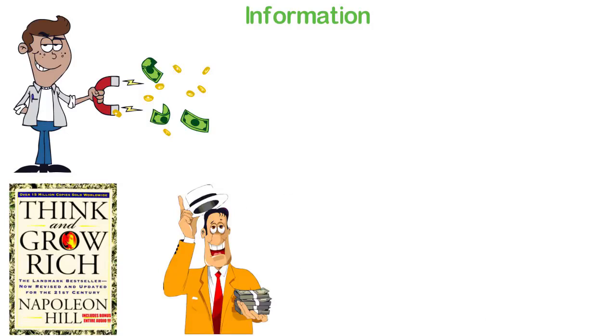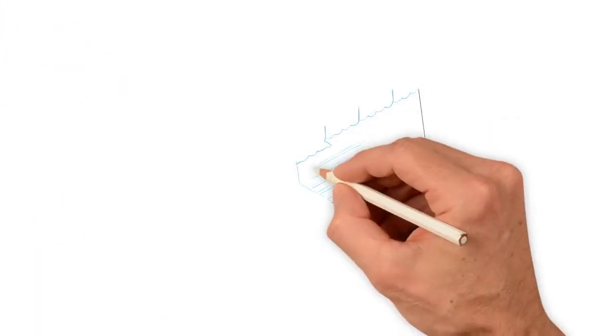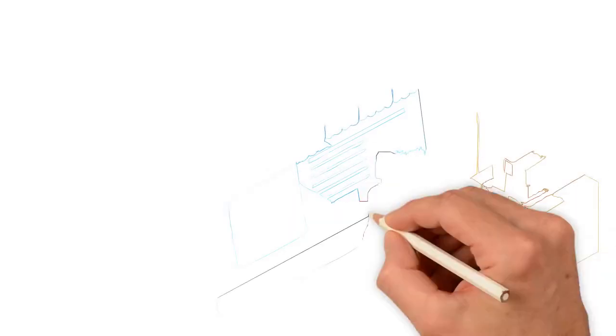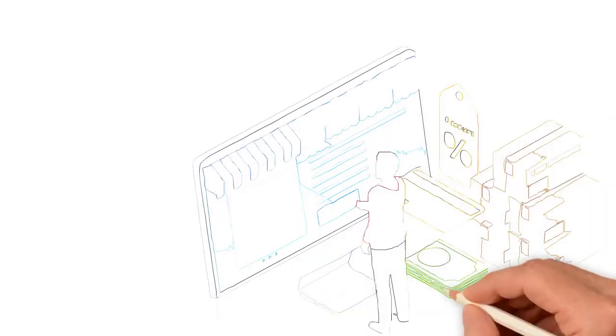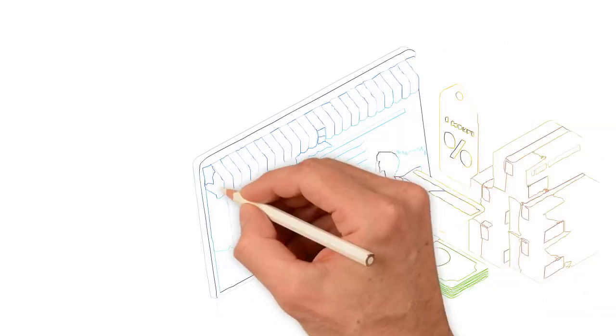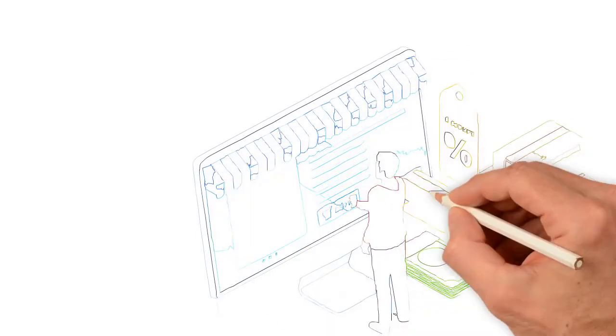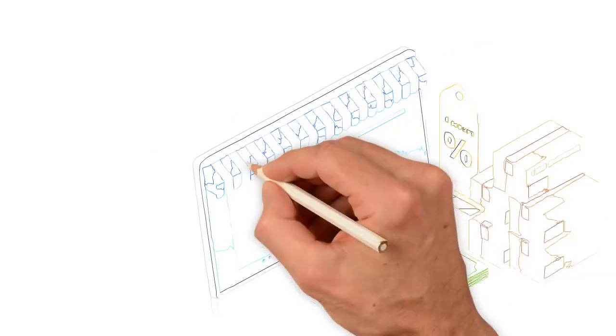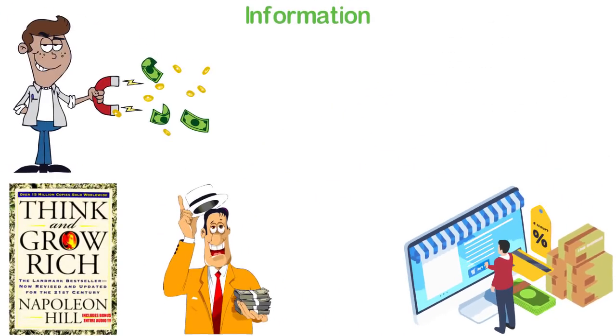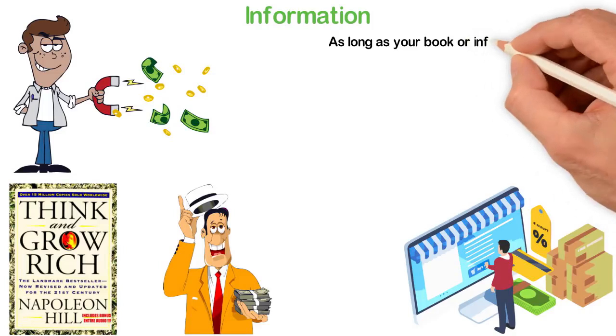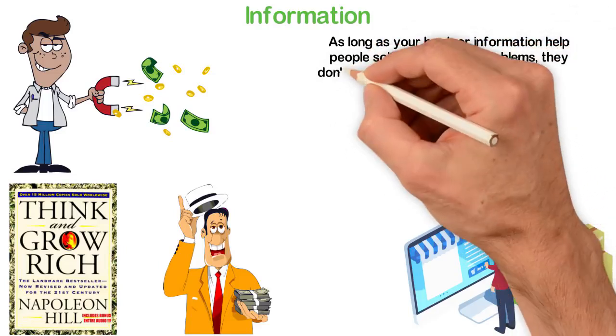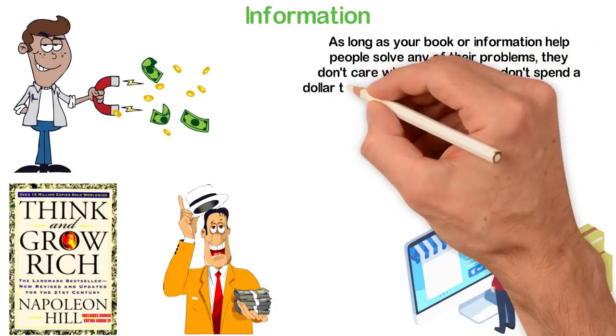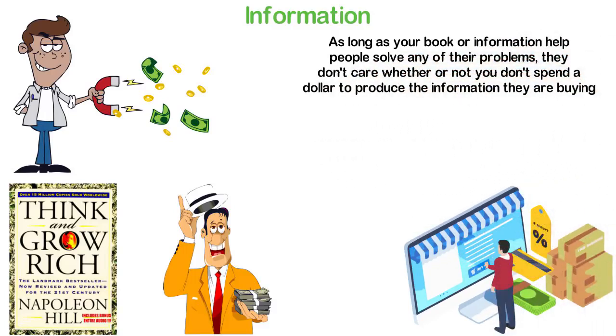This example even becomes crazily better with the internet. For example, I have more than 5 books I've written and selling as you watch this video. Of all these 5 books, I only published one as a hard copy. In fact, I later discovered that people are willing to pay more for the soft copy of my books than for the hard copy. As long as your book or information helps people solve any of their problems, they don't care whether or not you don't spend a dollar to produce the information they are buying.